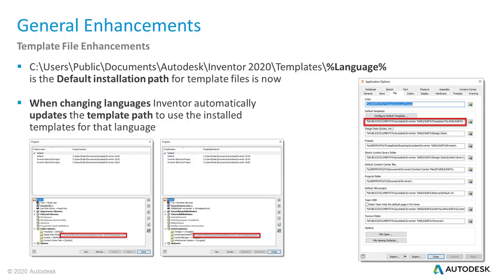You can use Inventor language packs to serve a convenient user experience. In Inventor 2020, the default installation path — C:\Users\Public\Documents\Autodesk\Inventor 2020\Templates — has been extended by %LANGUAGE%. When changing languages, Inventor automatically updates the template path by this path variable. CAD managers or administrators should make sure the company standard template folder is still used in the application option settings.